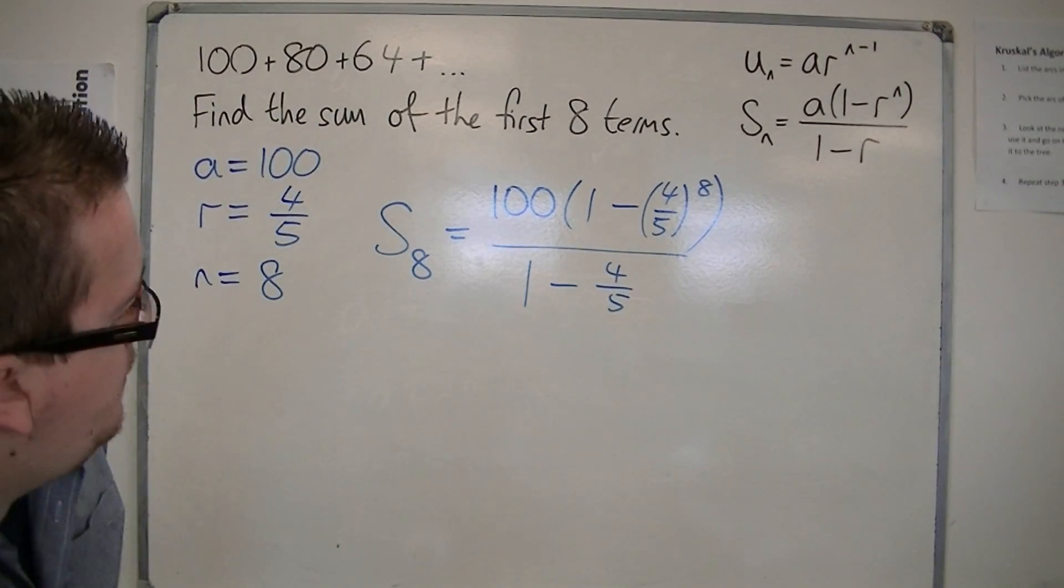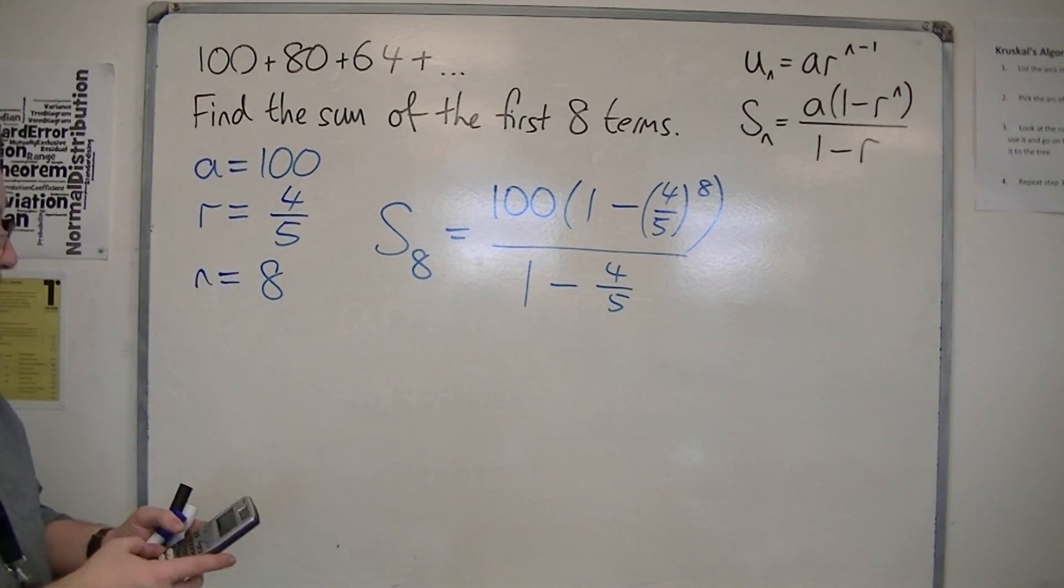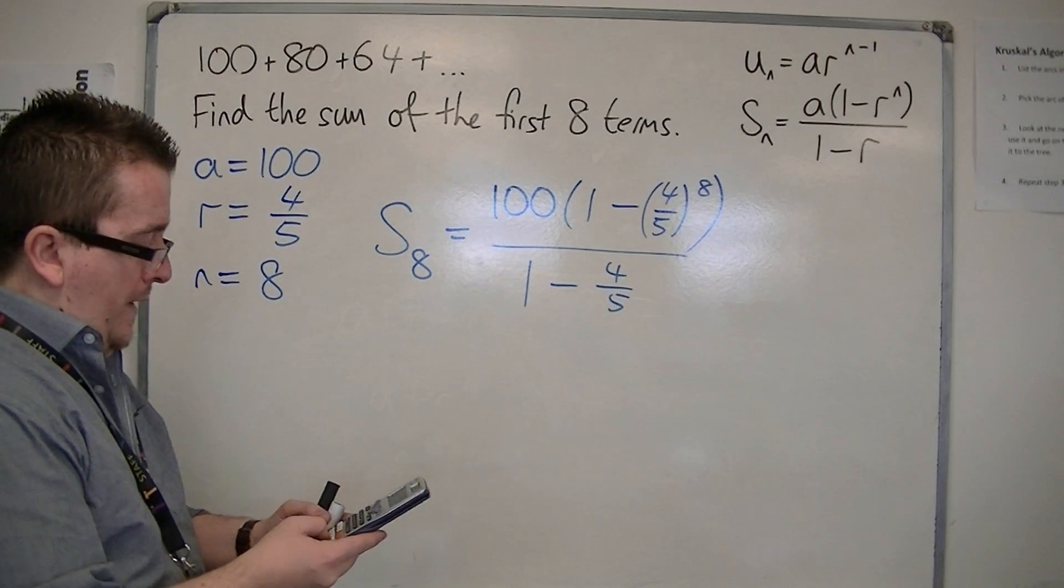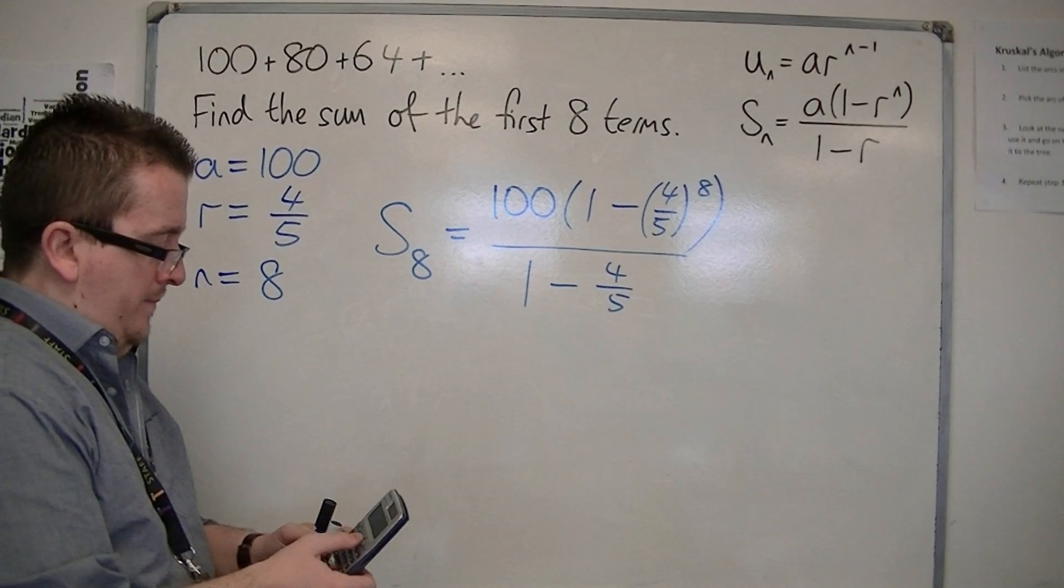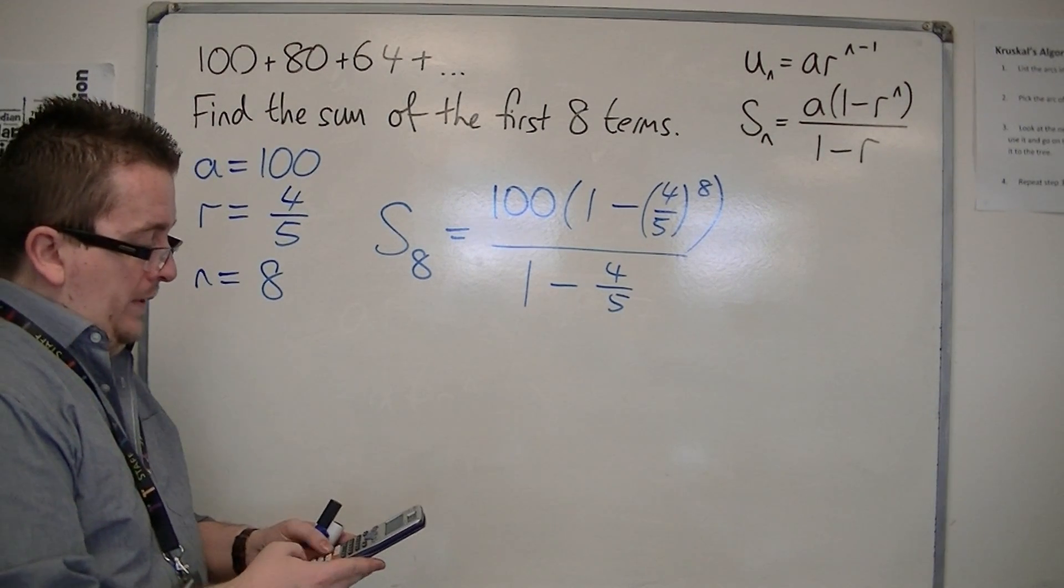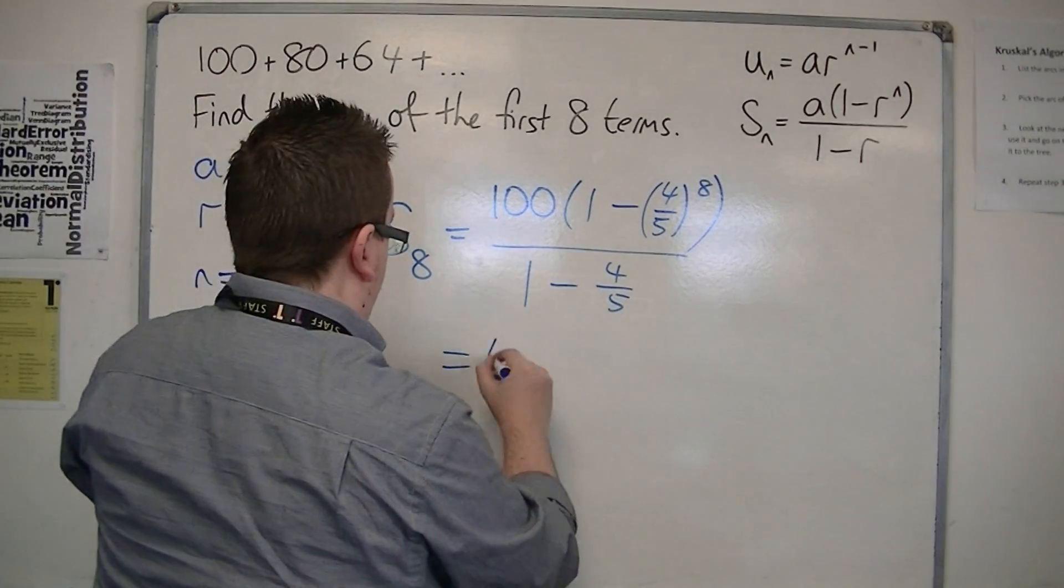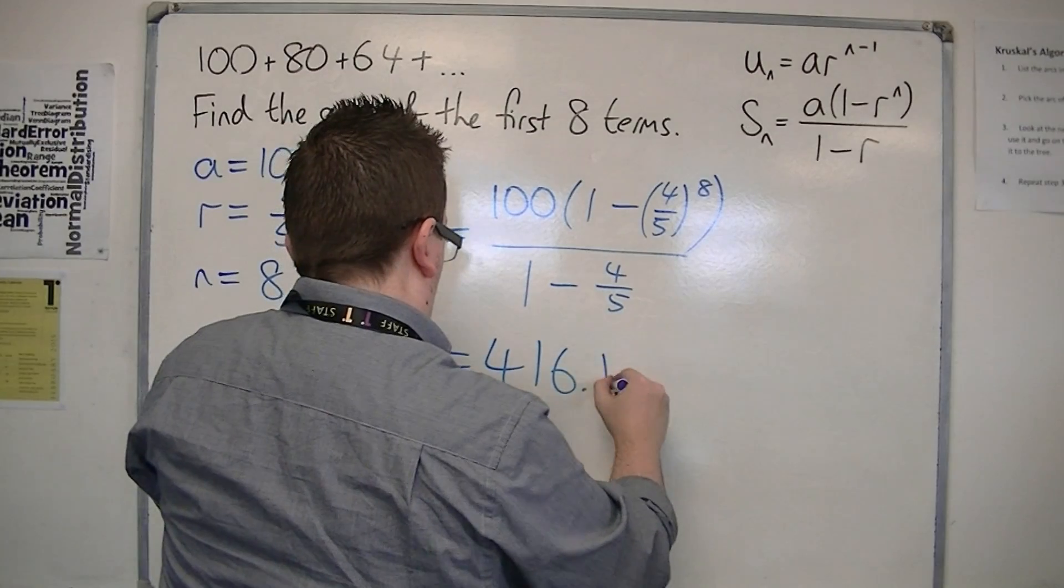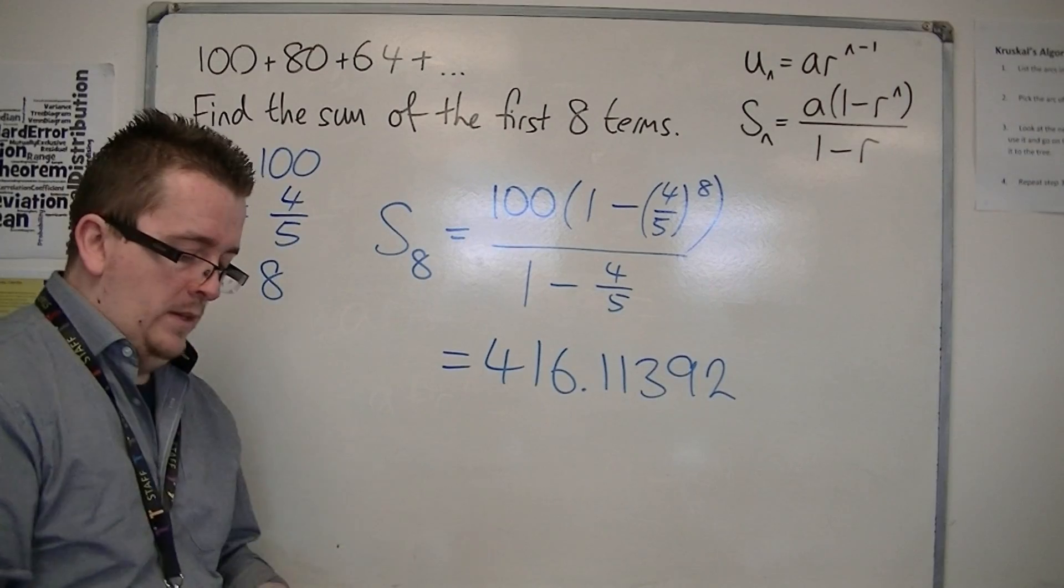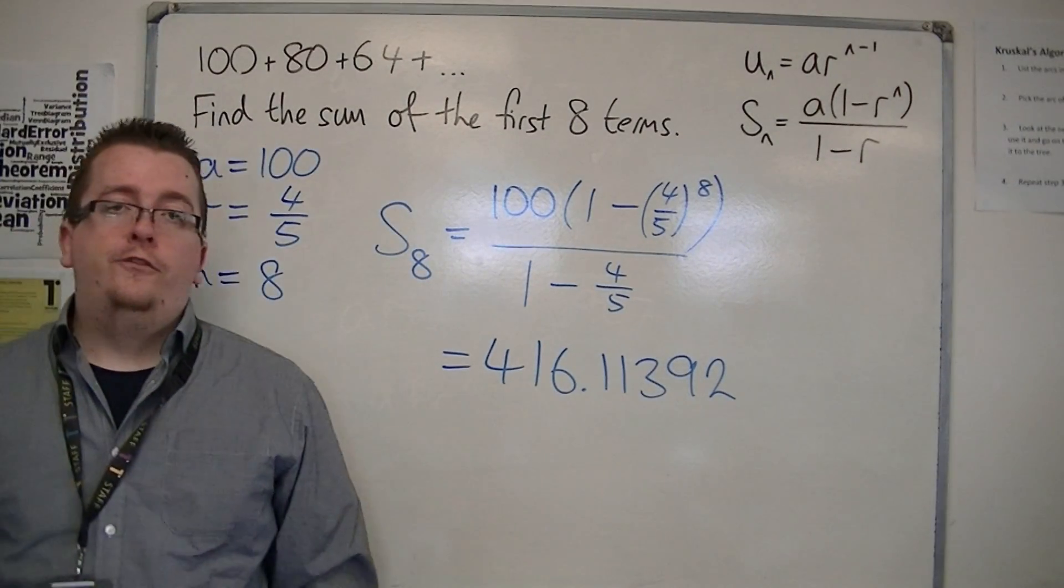Now, if you're happy with putting that in the calculator directly, then I would advise you to do that. So 100 times 1, take away 4 fifths to the power of 8, close bracket, over 1 minus 4 fifths. Which is 416.11392. And that's how we use the summation formula for geometric series.